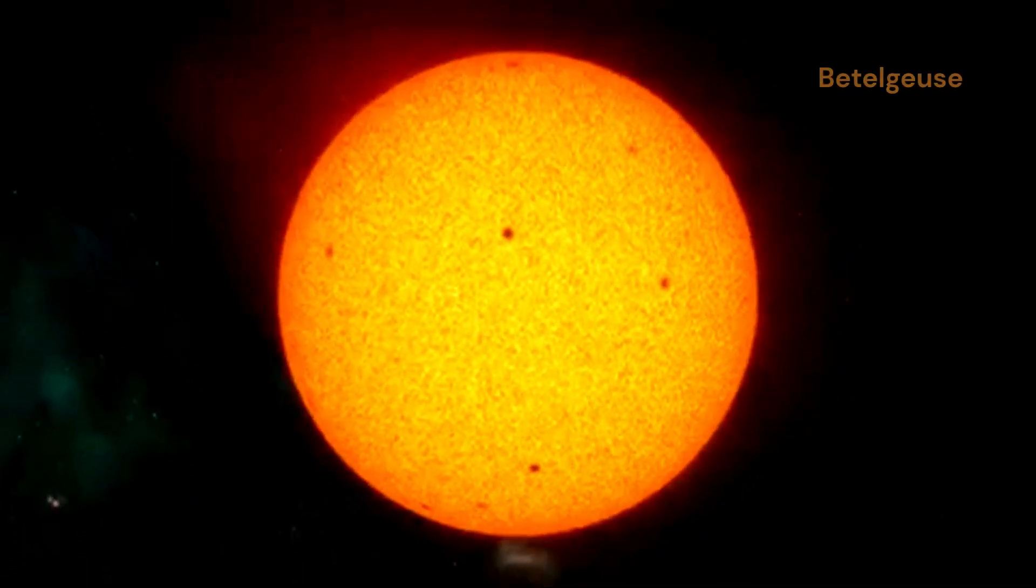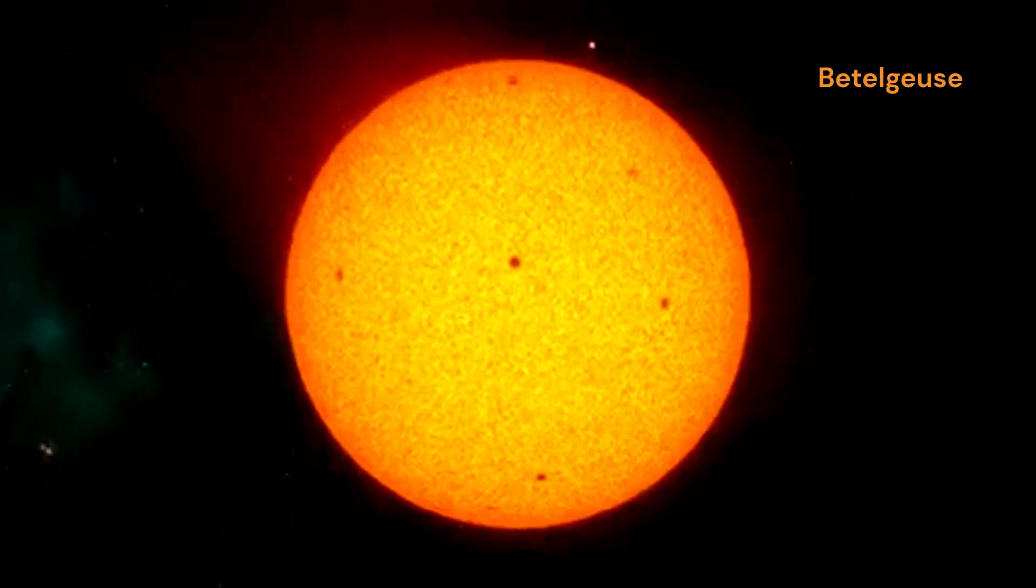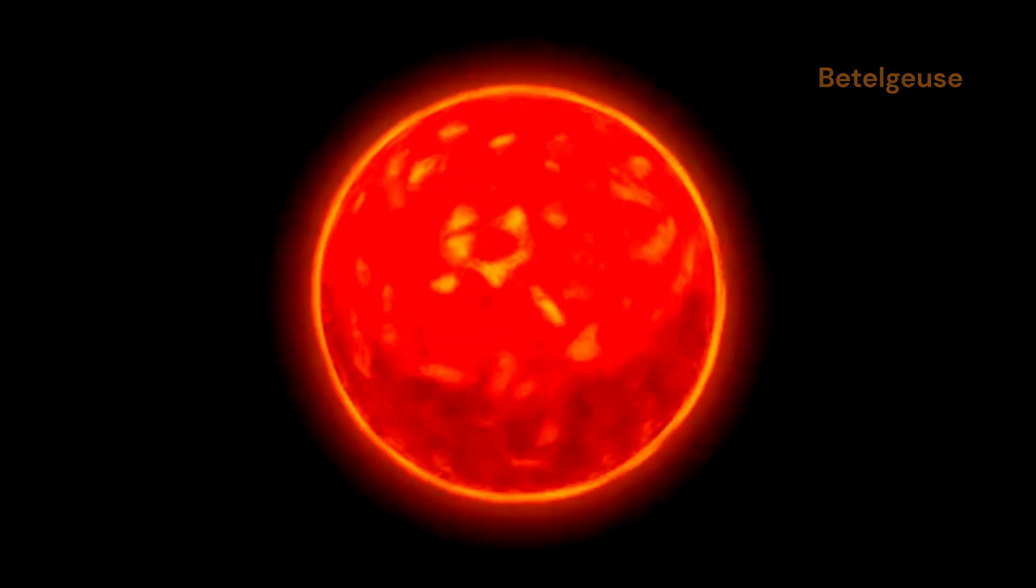In fact, Betelgeuse is so massive that it dwarfs our sun in comparison. Betelgeuse is a red supergiant, a type of star nearing the end of its life. Red supergiants are known for their immense size and relatively cool temperatures compared to other stars.